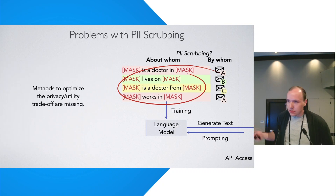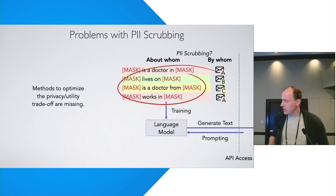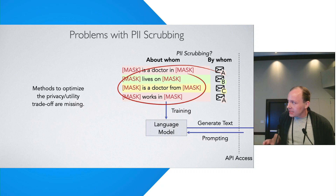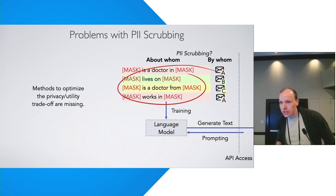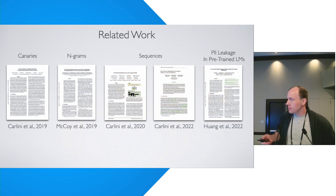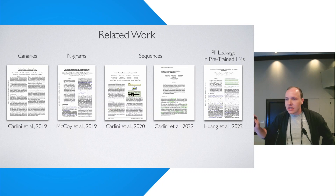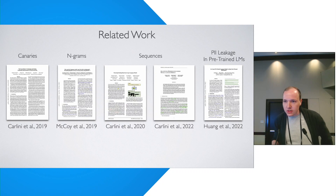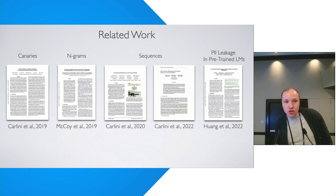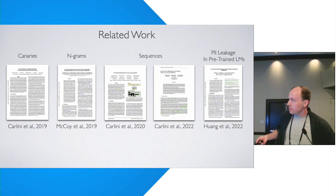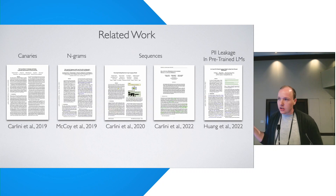So how do these two defenses complement each other, or are they even redundant? Does differential privacy already protect from leakage? What's really missing is a method to measure and optimize the privacy-utility trade-off for PII leakage. Existing work has looked at memorization through canaries, n-grams, or sequences, irrespective of whether they contain private information. Recent work by Huang et al. looked at PII leakage in pre-trained models. None of these papers examined the interplay of defenses or formalized leakage with security games — and that's what we did.